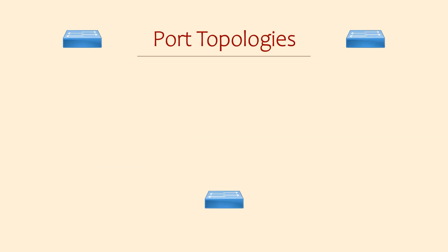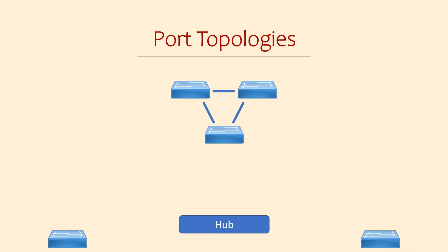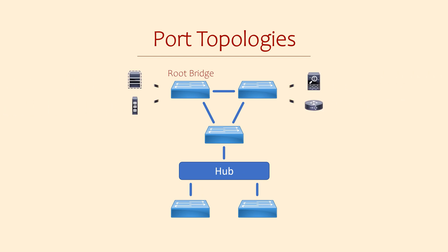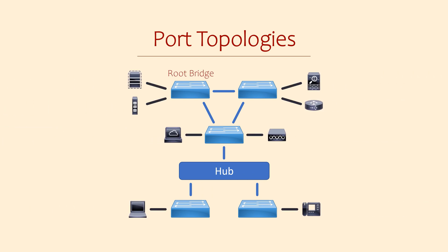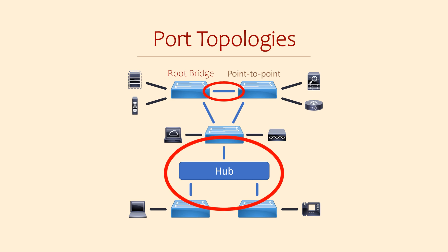When we think of spanning tree topologies, we can think about different ways that ports can behave. So far, we've mainly talked about the links between switches. As far as RSTP is concerned, these are either point-to-point ports, which is a direct connection between two switches, or shared ports, which connect to a shared segment like having a hub in your network. We've looked at both of these already, but there's a third type we haven't looked at, called an edge port — this is where edge devices connect.